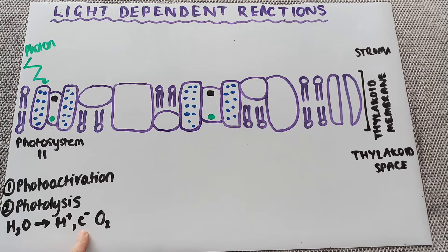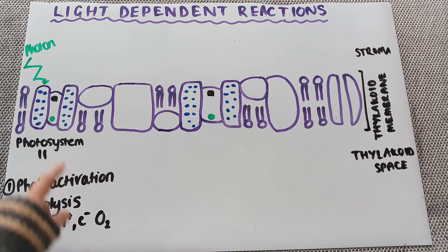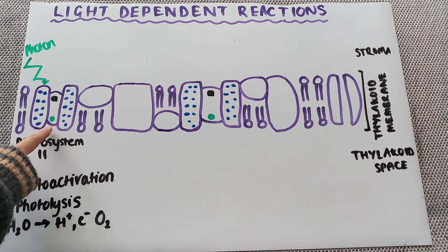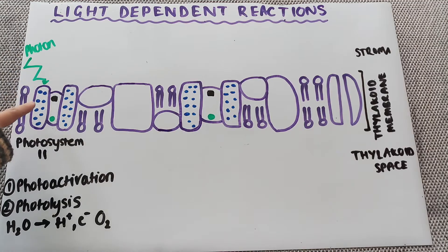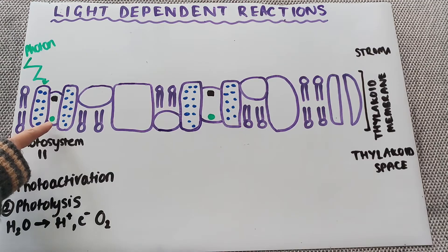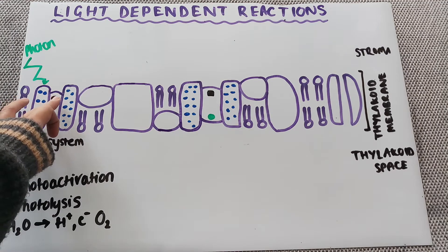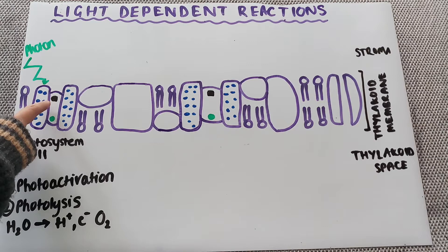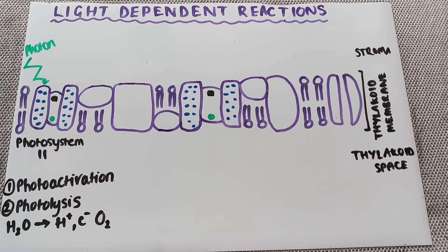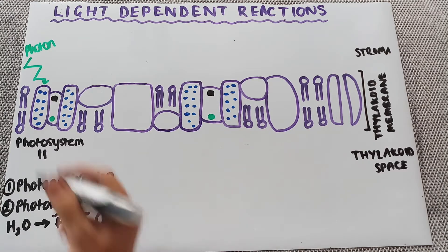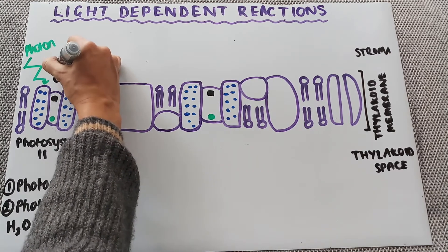The electron from photolysis is transferred to photosystem 2's chlorophyll A, where the photon of light has already arrived. The photon excites that electron and transfers it up to the reaction center, where it is captured by the electron acceptor within that reaction center. So up here we now have an excited electron.